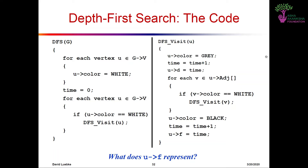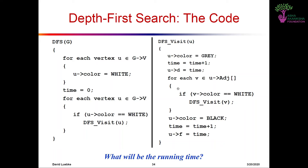Looking at the DFS pseudocode: DFS is the main function. For each vertex U belonging to G.V, we assign it the color white. We initially set the timer counter to 0. For each vertex U in G.V, if U's color is white, we call the DFS-visit function. We choose a node which has not been visited and call DFS-visit.